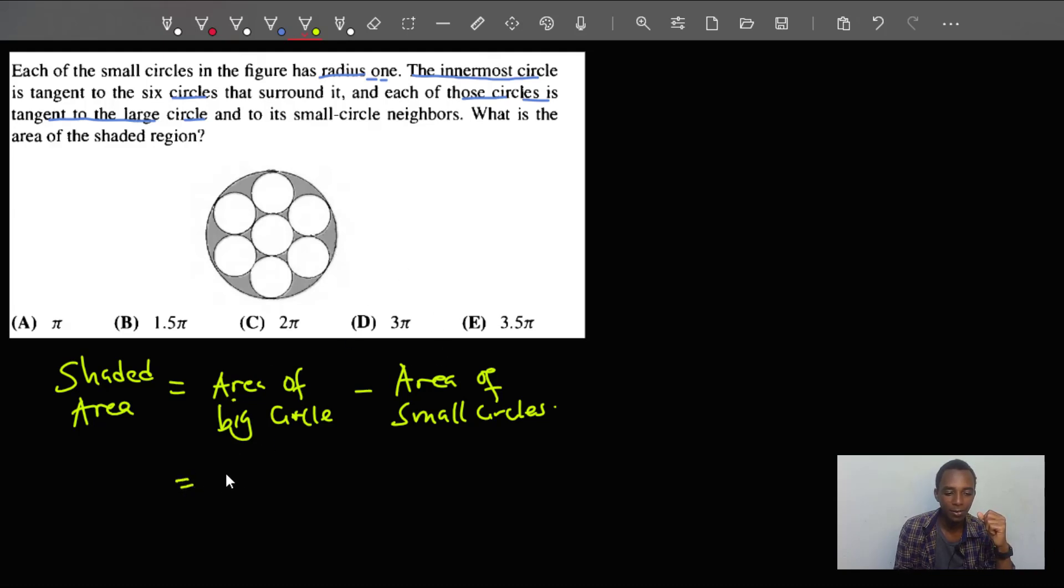We know that area, of course, is pi r squared. Let capital R be the radius of the big circle. And for the seven small circles, I'll have seven times pi r squared. So there are seven circles, as you can see,